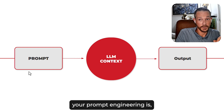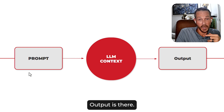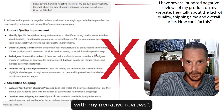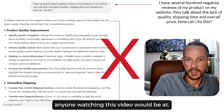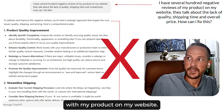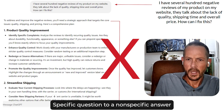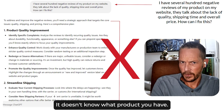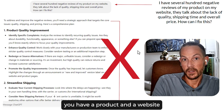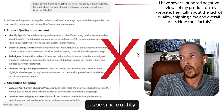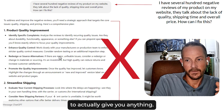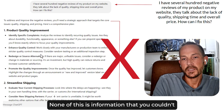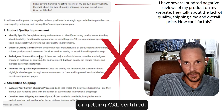No matter how great your prompt engineering is, it's still a singular prompt or multiple prompts going into a large LLM context, and then you get an output. For example: 'I have several hundred negative reviews of my product on my website. They talk about the lack of quality, shipping time, and overall price. How can I fix this?' That's a specific question getting a non-specific answer because it doesn't know what reviews you have, what product you have — it just knows you have a website with negative reviews about quality, shipping, and price. That's not enough. The output just says: identify specific complaints, enhance quality control, redesign or source alternatives. None of this is information you couldn't have gotten from reading a marketing blog. That's just the way it is.